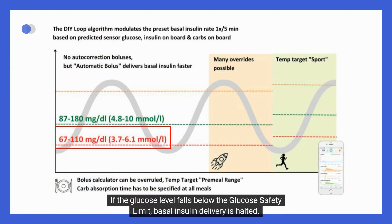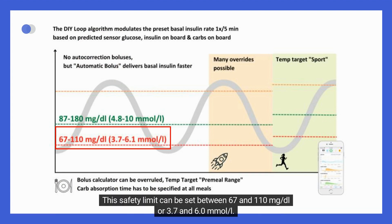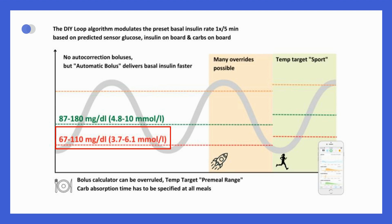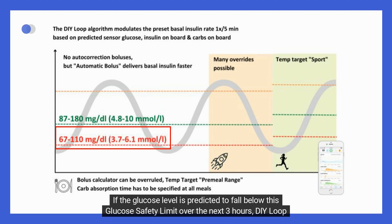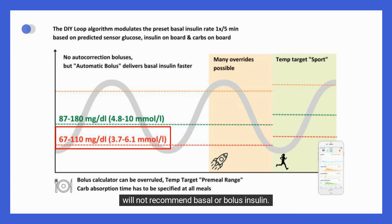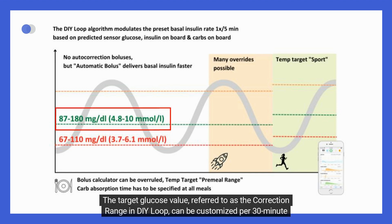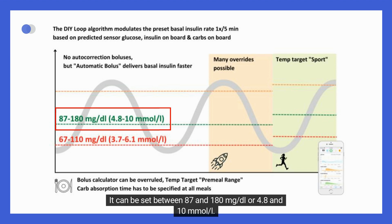If the glucose level falls below the glucose safety limit, basal insulin delivery is halted. This safety limit can be set between 67 and 110 mg/dL or 3.7 and 6.0 mmol/L. If the glucose level is predicted to fall below this limit over the next 3 hours, DIY Loop will not recommend basal or bolus insulin. The target glucose value, referred to as the correction range, can be customized per 30-minute time block, set between 87 and 180 mg/dL or 4.8 and 10 mmol/L.